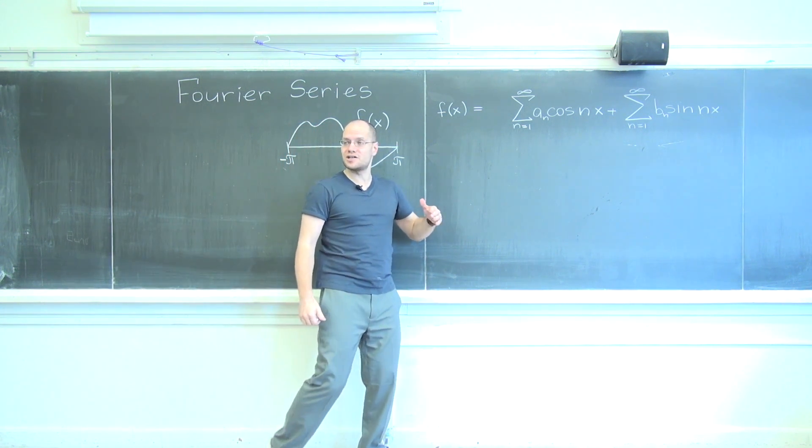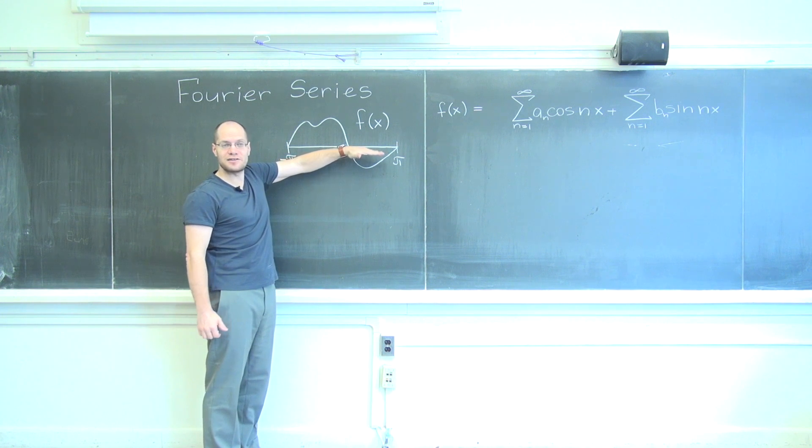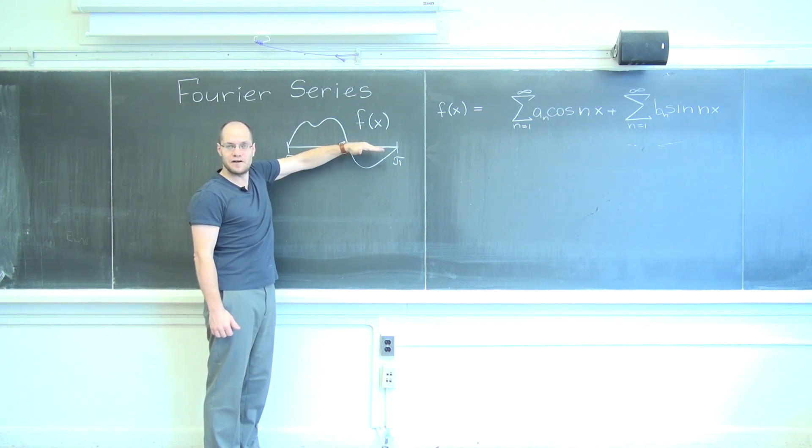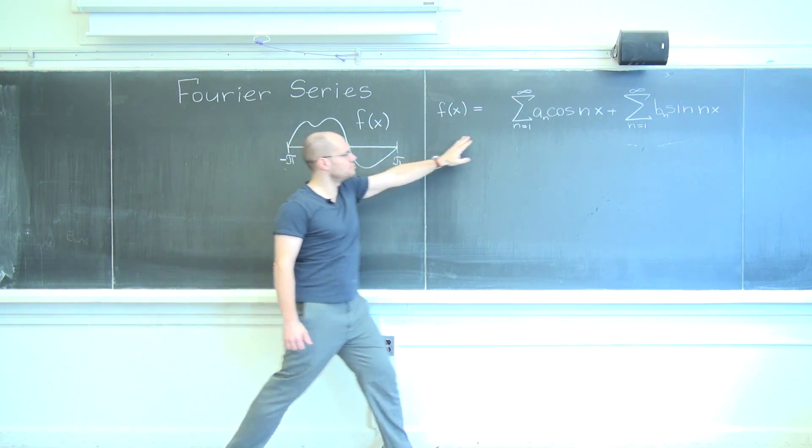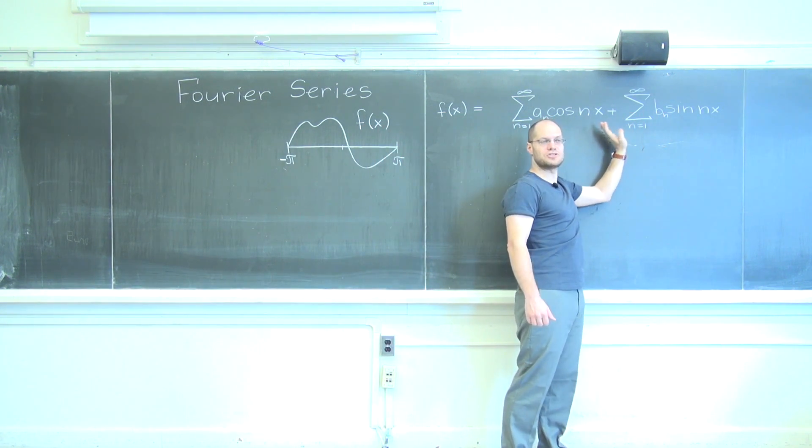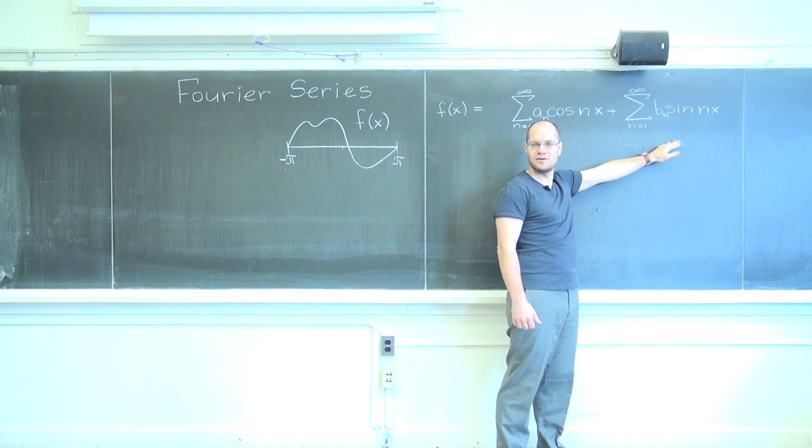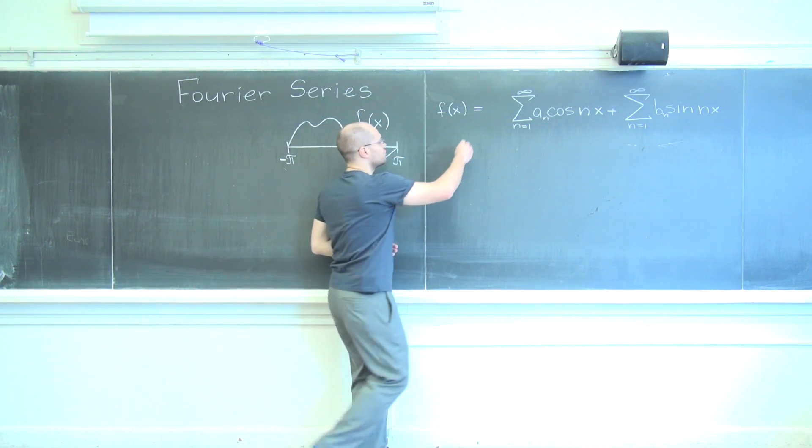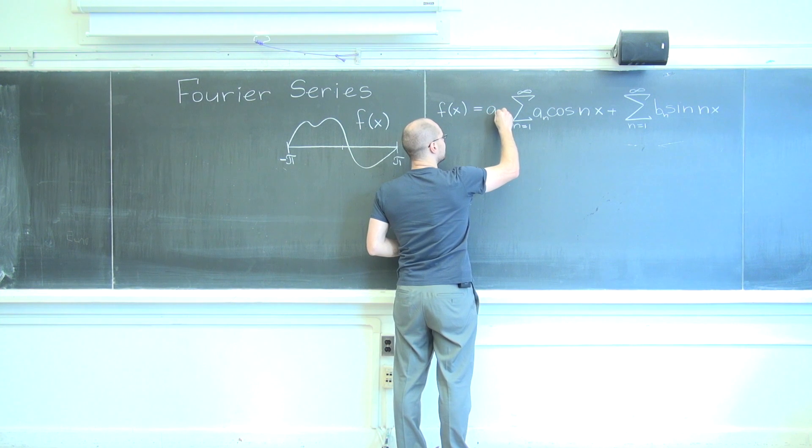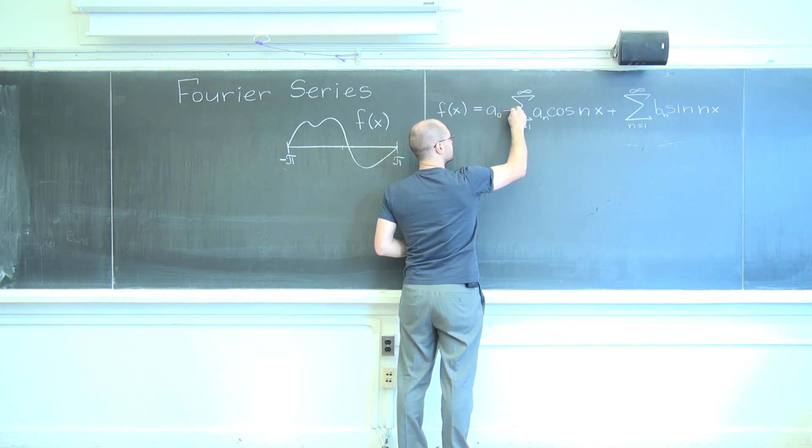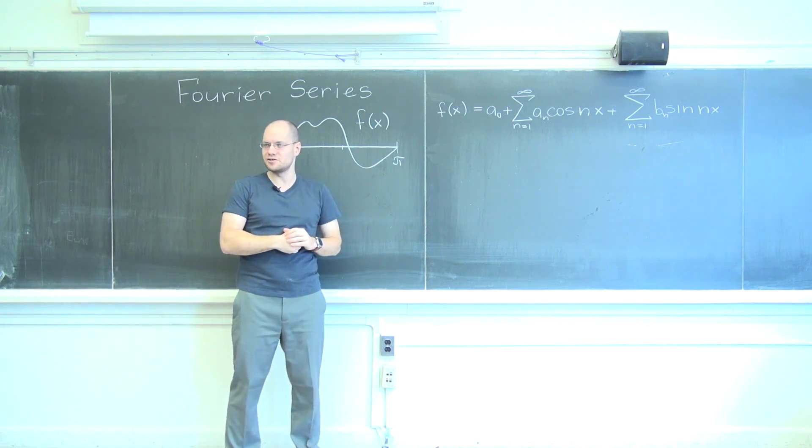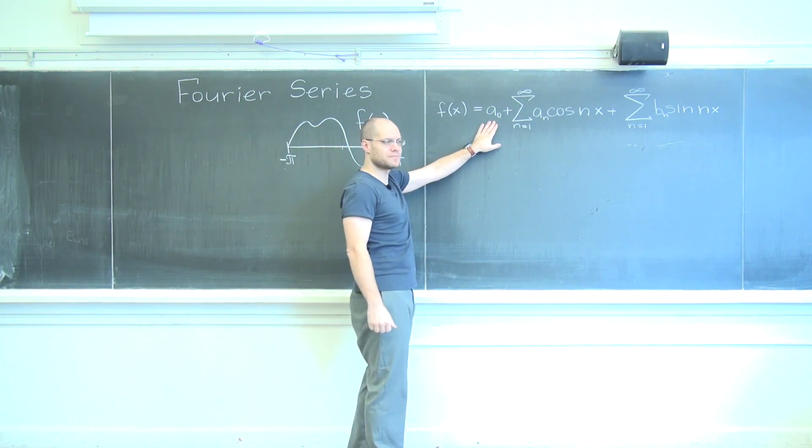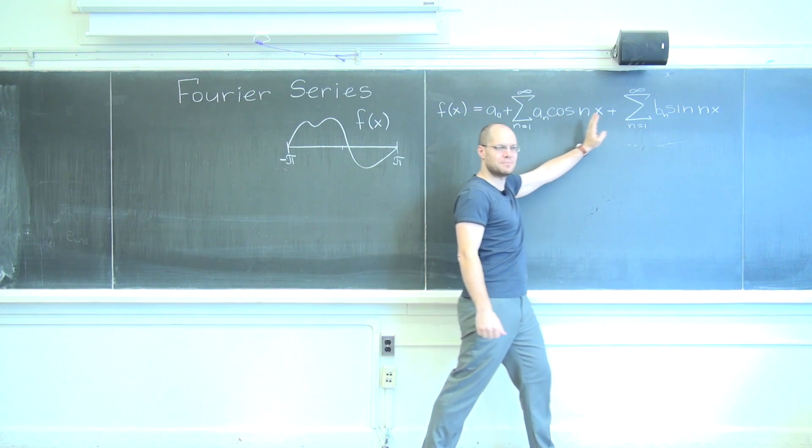And you have to realize that all the sines and cosines, they're centered right on the axis. So if the function has an average above the axis, this won't be able to help us. So we want another free term, and it's usually called a0. This is what a Fourier series looks like: a constant term, plus a bunch of cosines and a bunch of sines.